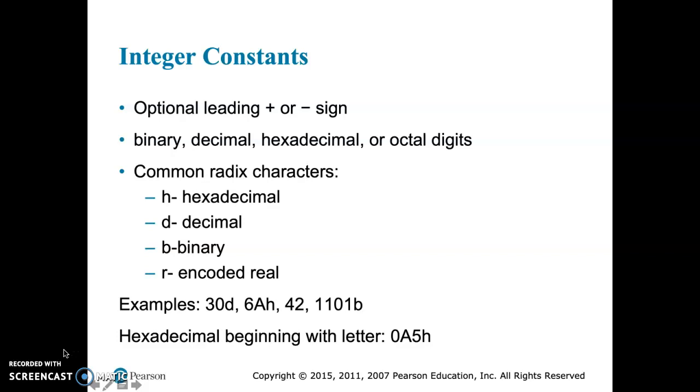There's four real options. We have hexadecimal, which is H, decimal which is a base 10, which is D. Hexadecimal, of course, is base 16. Binary is base 2, that's B. And then we have encoded real. So some examples here, 30D is the number 30, that's a decimal.